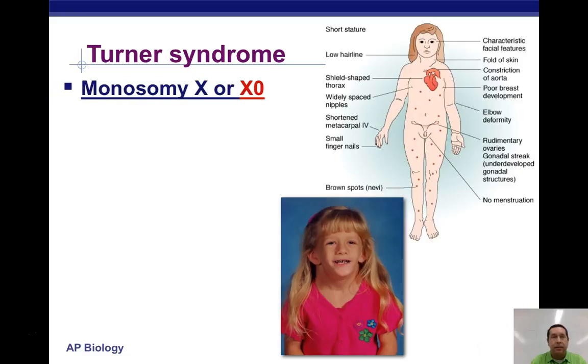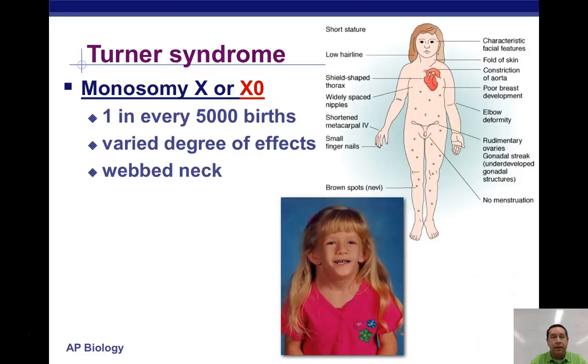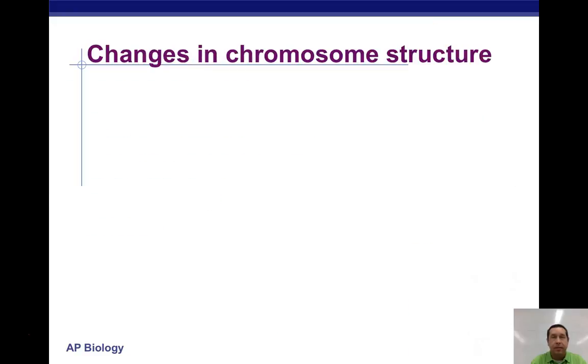Turner syndrome occurs in one in every 5,000 births with varying degrees of effect. As mentioned earlier, characteristics include possible webbed neck, short stature, and sterility.